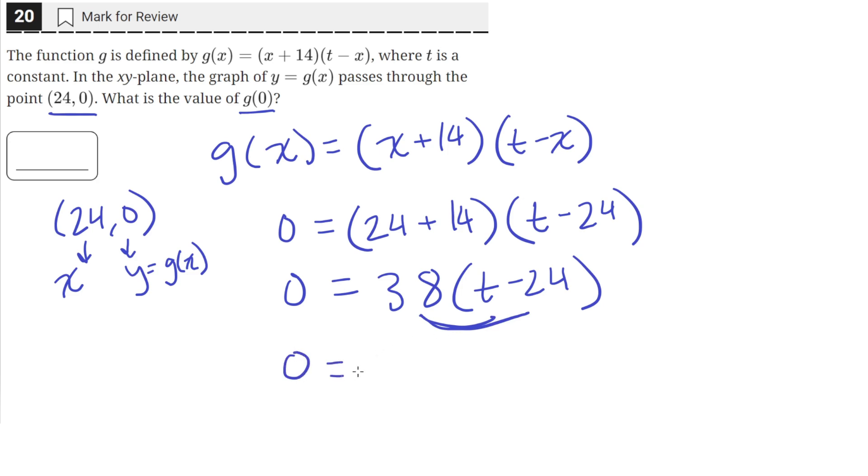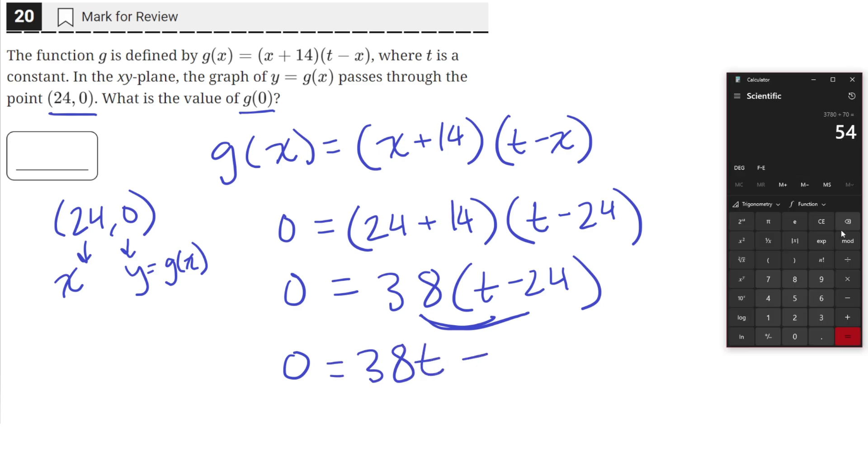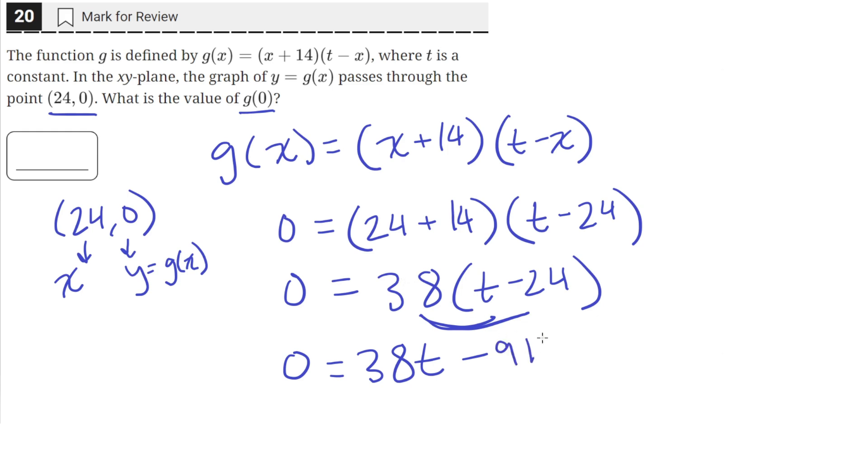On the left-hand side, we'll still have the 0. Then we'll have 38t minus 38 times 24. So 38 times 24 is equal to 912, and this will be negative since there's a negative sign here.